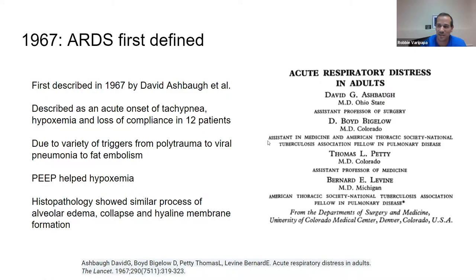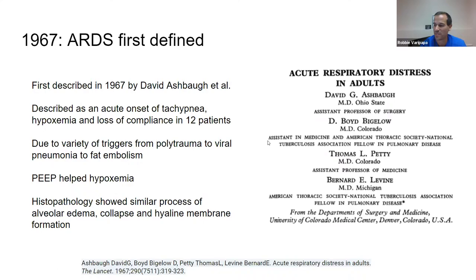ARDS was first defined back in 1967, as many diagnoses were, starting with a historical description of a cohort of patients. In this case, it was David Ashbaugh describing 12 patients with respiratory failure and bilateral infiltrates due to a variety of triggers, ranging from polytrauma to viral pneumonia to fat embolism syndrome. The histopathology showed alveolar edema, collapse, and hyaline membranes, and he noted that PEEP significantly helped the hypoxemia. This was originally published in the Lancet.